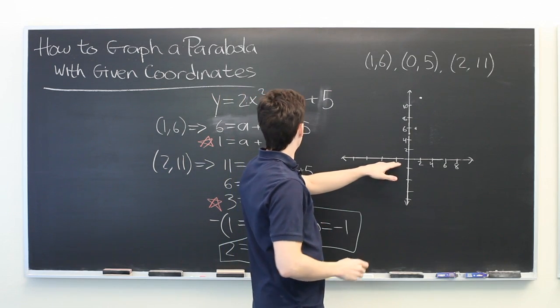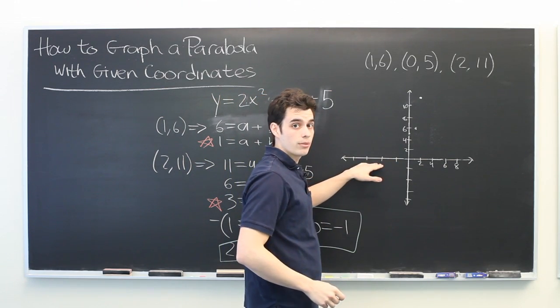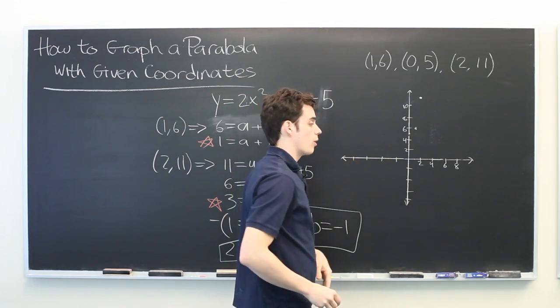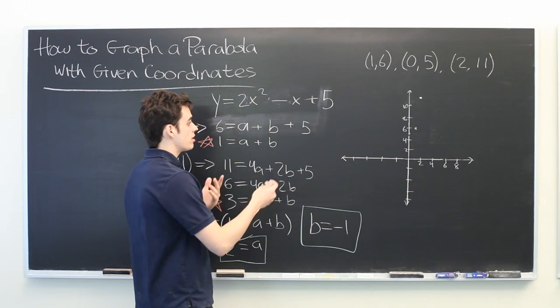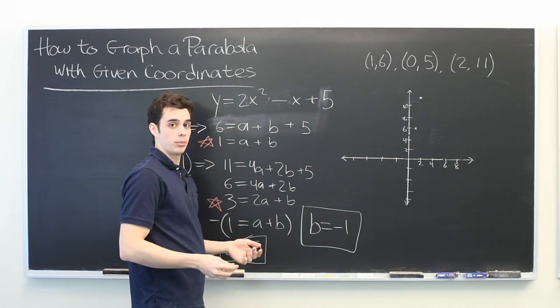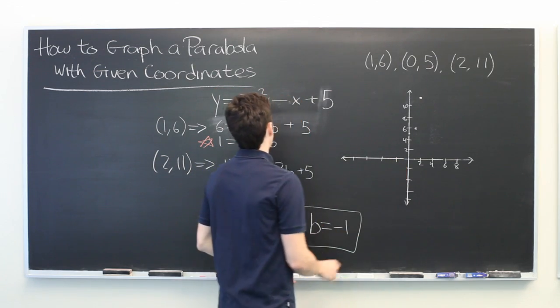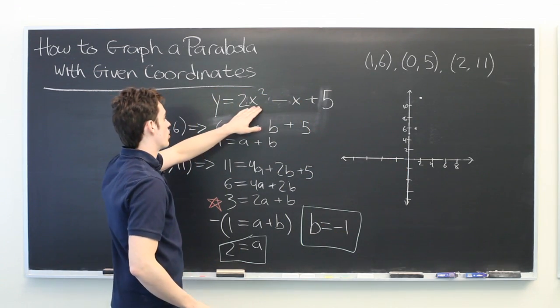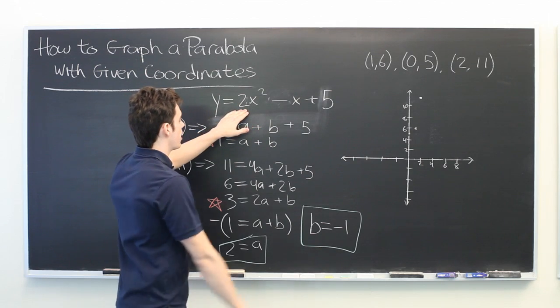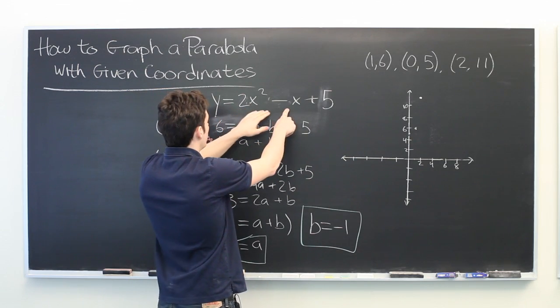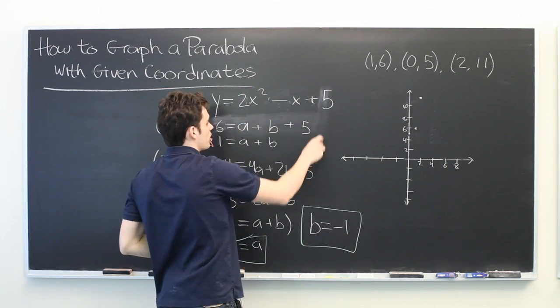So from here, we can simply take a few more x values, plug them into this equation that we've just derived, and then see what y values we get. So we can complete our graph. Let's do x equals negative 1. Negative 1 squared is 1, so we get 2. Minus negative 1 is 3. 3 plus 5 is 8.